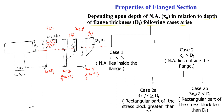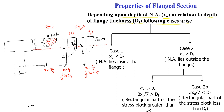When loading a flanged beam from the top, the response will fall into Case 1, Case 2a, or Case 2b. Based on which case applies, the moment of resistance value will change. We will stop today's class here and study the detailed analysis of these cases in the next class. Thank you.